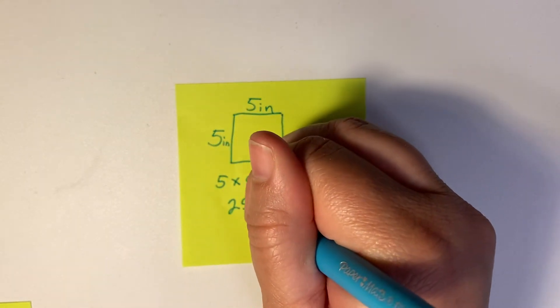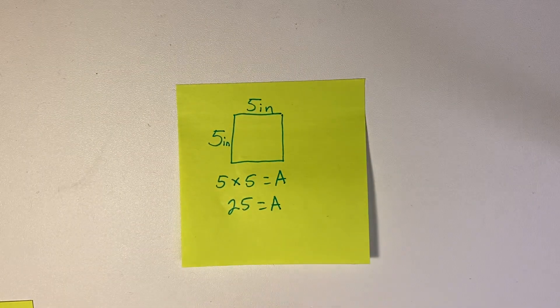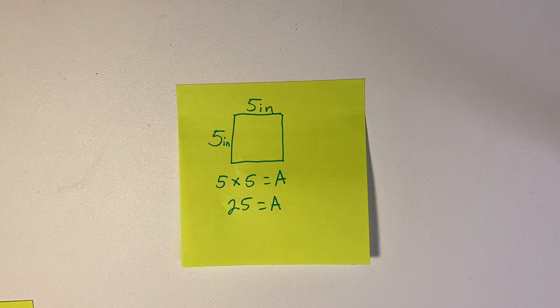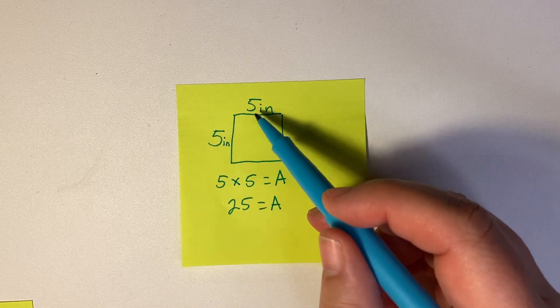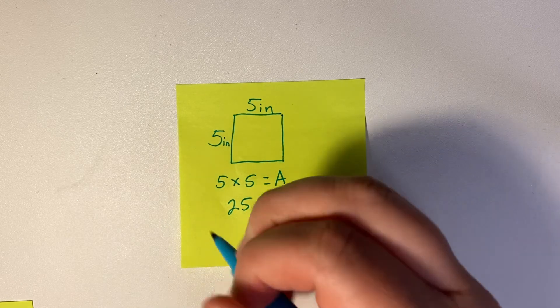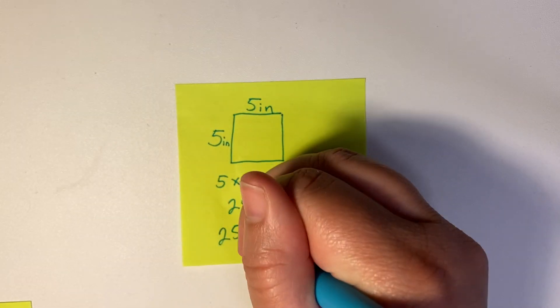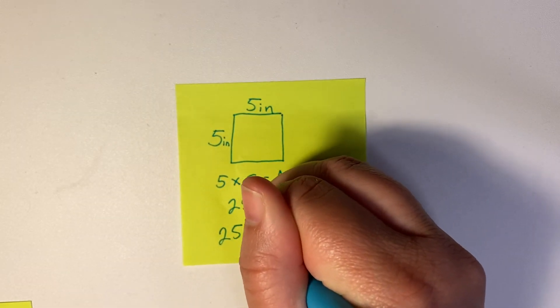That would be 25 equals the area. This isn't just any old 25—it's not a length. It means that 25 squares fit in here evenly, and these would be square inches.